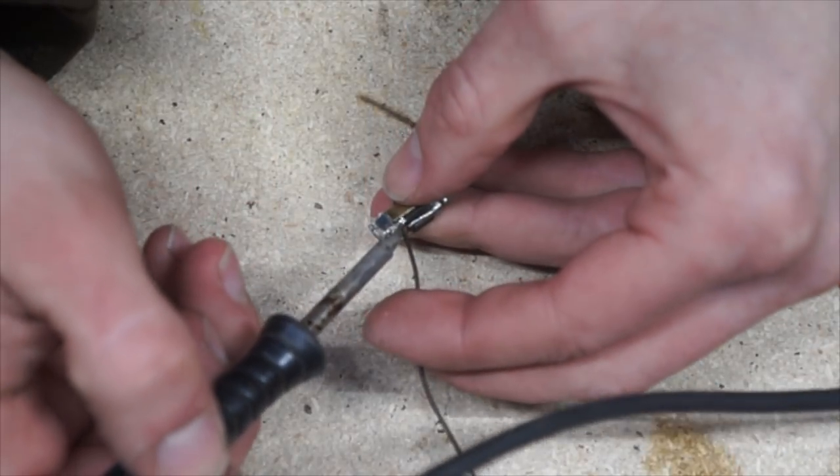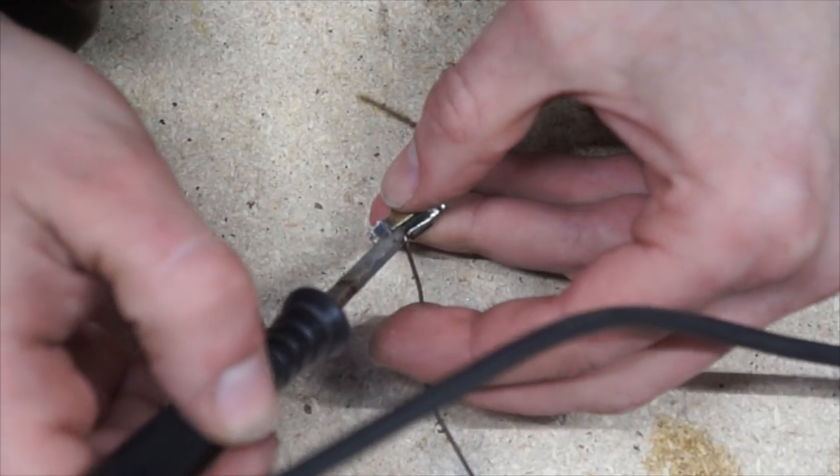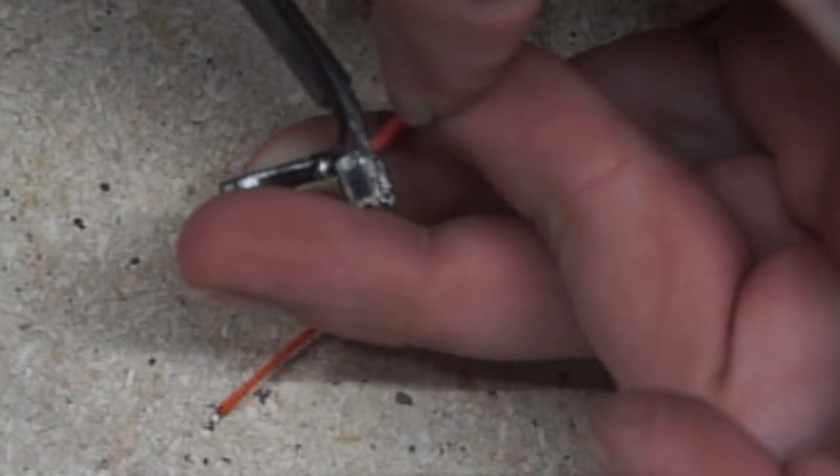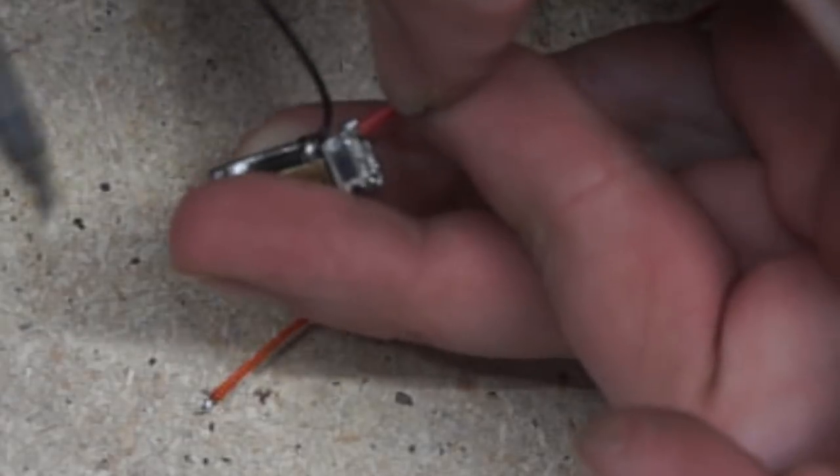The negative power wire can be soldered directly to the source tab of either MOSFET, since both source tabs are connected. This short red piece of wire connects the battery's positive terminal to the positive input of the board.